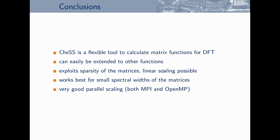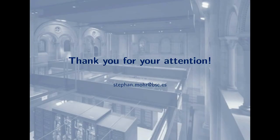To conclude: I presented CHESS, a flexible tool for the calculation of matrix functions tailored specifically for density functional theory, but extensible to other functionalities. It exploits the sparsity of matrices, achieving linear scaling with respect to system size. It works very well for small spectral width, and exhibits very good parallel scaling with a hybrid MPI and OpenMP scheme. Thank you very much for your attention.